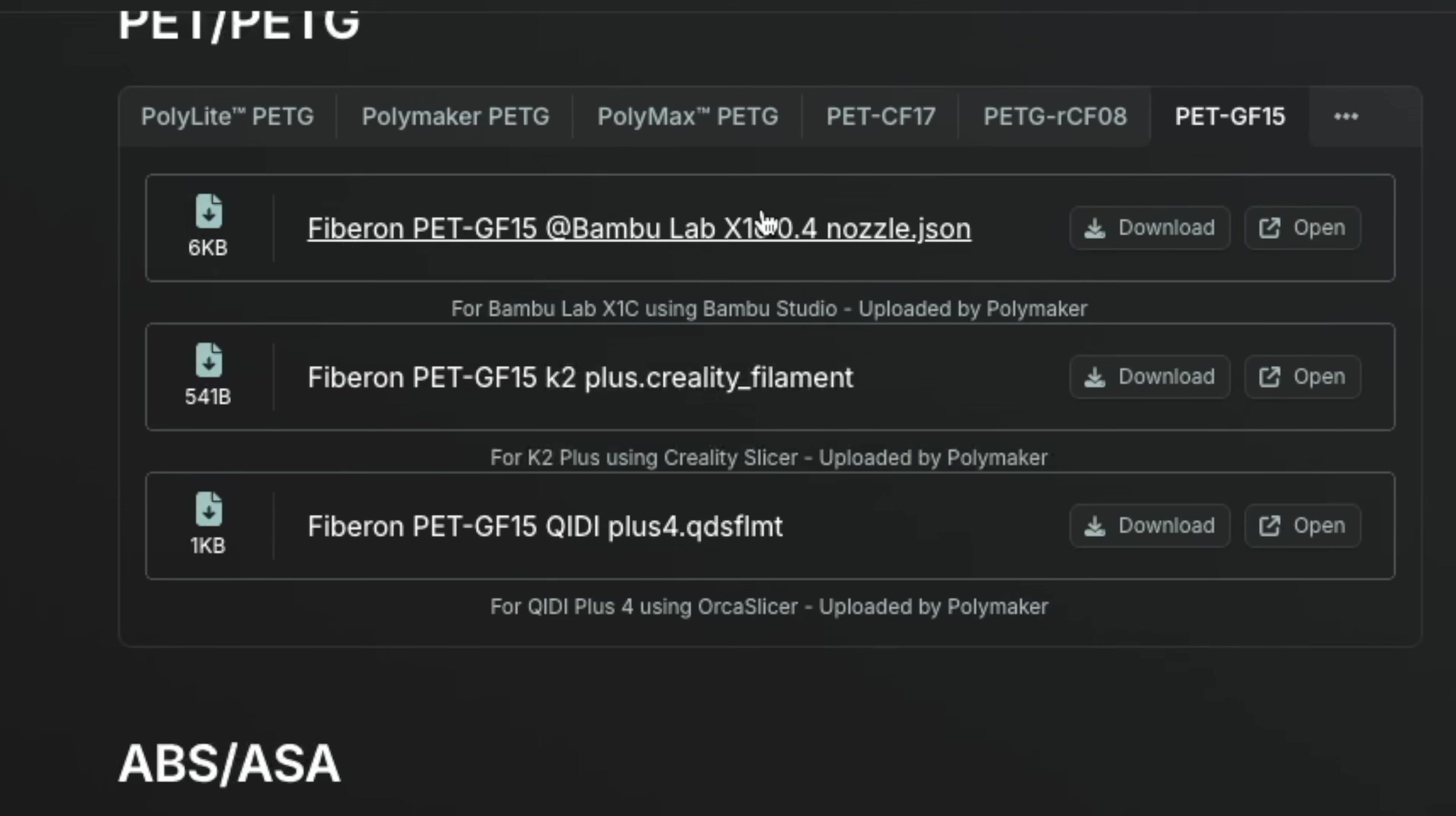If you're printing on the Bamboo Lab X1 Carbon, Creality K2, or Chidi Plus 4, they actually have profiles available for this material in their wiki that you can just download, which is really nice to see.